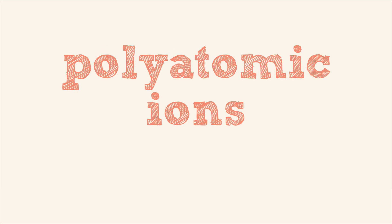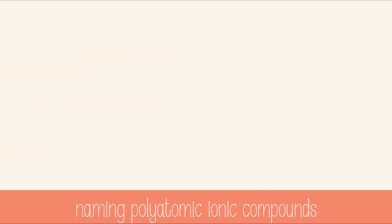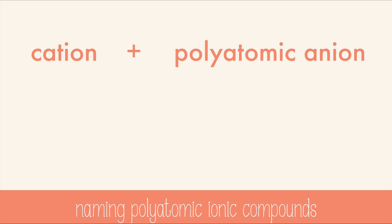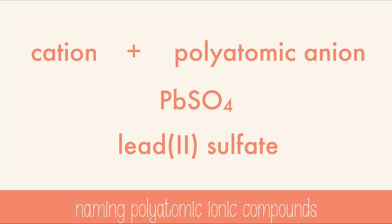Polyatomic ions are just ions that are made with more than two elements. They follow the same basic rules as binary ionic compounds, except they carry the charge across multiple atoms. Naming compounds with polyatomic ions starts with a cation, and then you add the polyatomic anion. So PbSO₄ is lead two sulfate. The rules of Roman numerals still apply to the cations that have multiple ion possibilities.